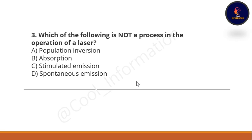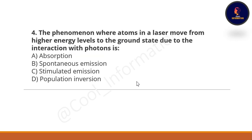Next question: Which of the following is NOT a process in the operation of a laser? Option A: population inversion. Option B: absorption. Option C: stimulated emission. Option D: spontaneous emission. The correct option is population inversion.